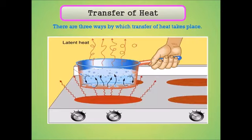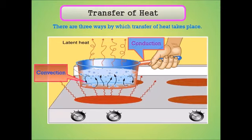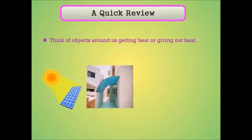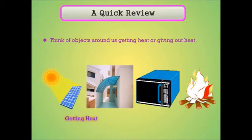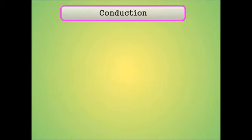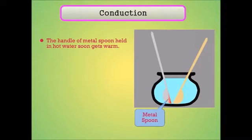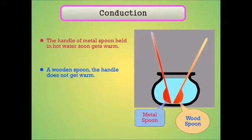Three ways of transfer of heat: conduction, convection, and radiation. A quick review: think of objects around us getting heat and giving out heat. Solar panel and fiberglass are examples of getting heat. Microwave and fire are examples of giving heat.